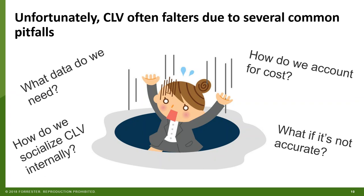CLV is not an accurate metric. If my projected value with Comcast is $2,000 in the future, it's not going to be exactly $2,000. Some teams — particularly finance, because they're used to very accurate metrics that tie together — have a hard time adopting this. And finally, if it's not accurate, how do we constantly improve it?